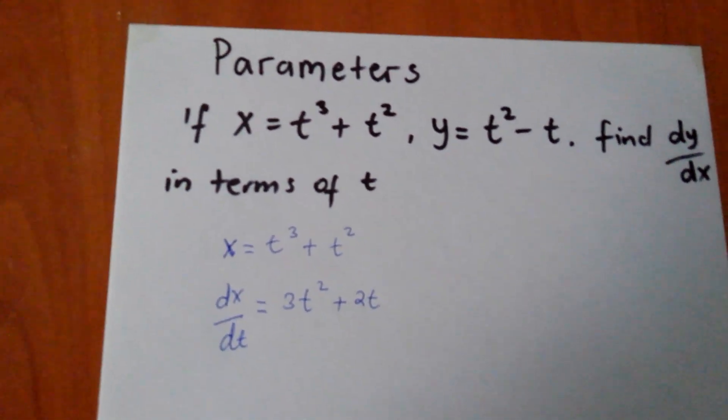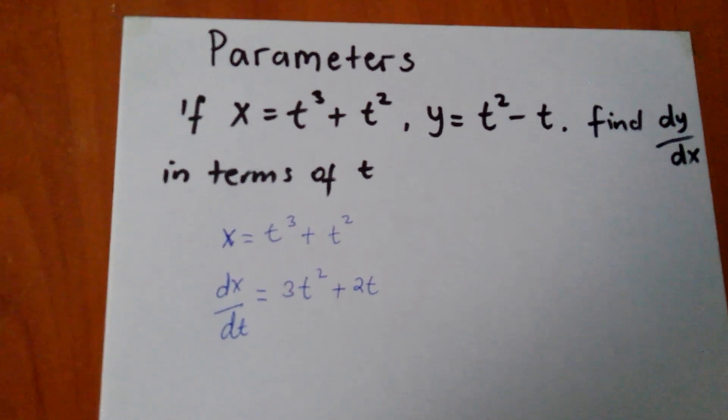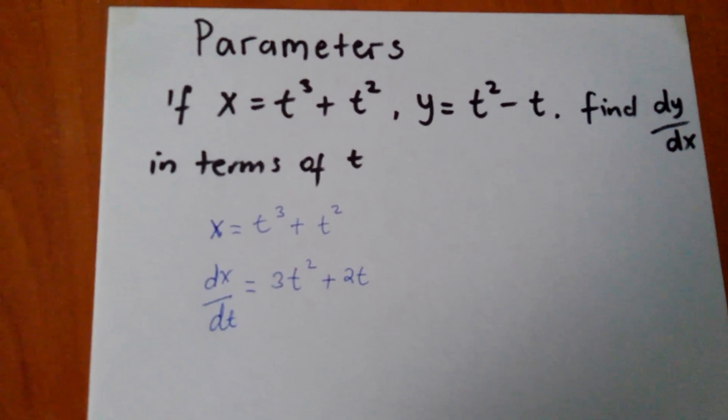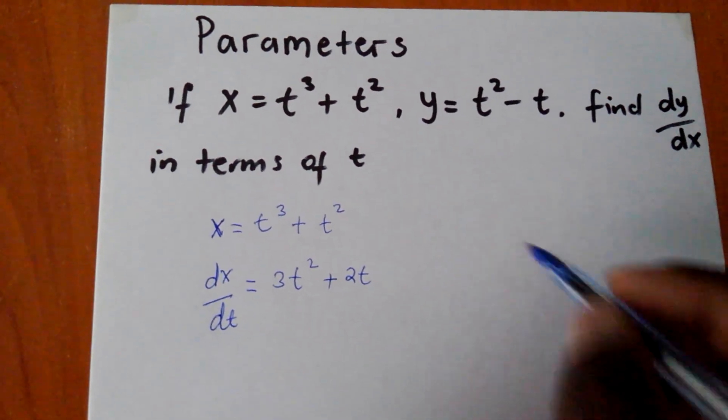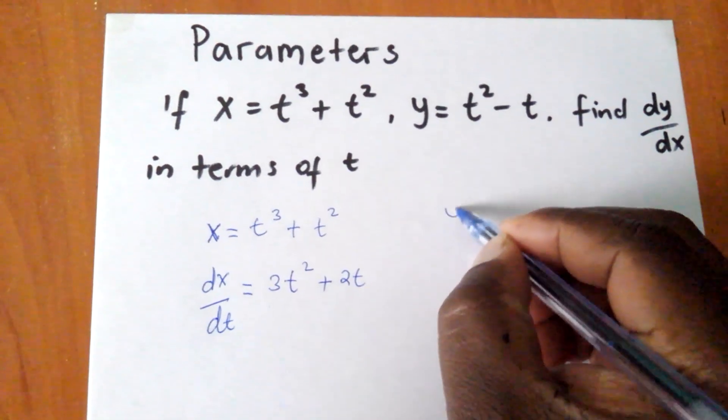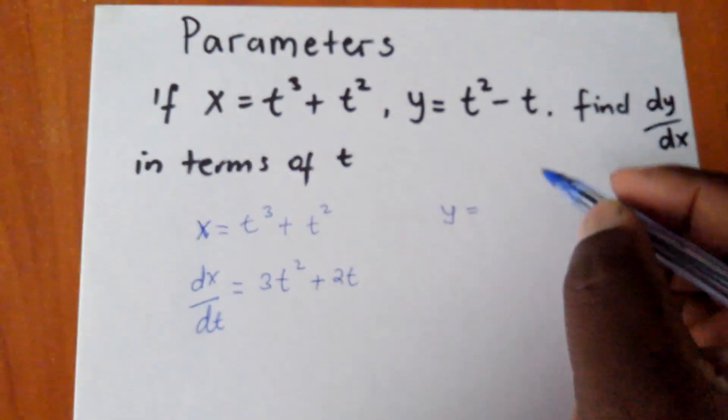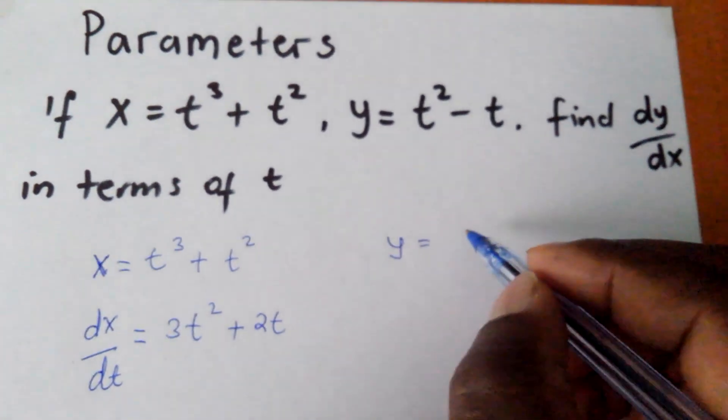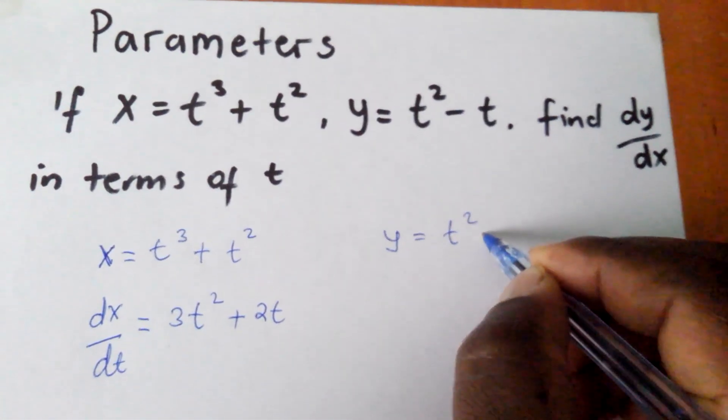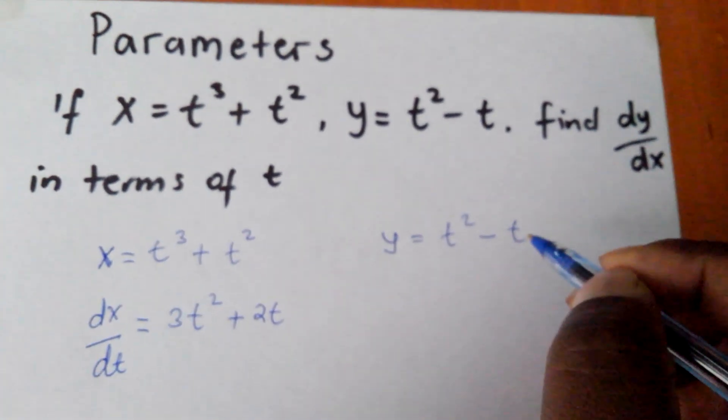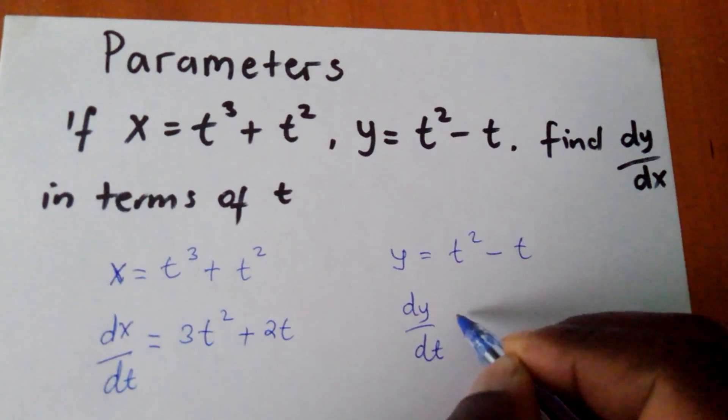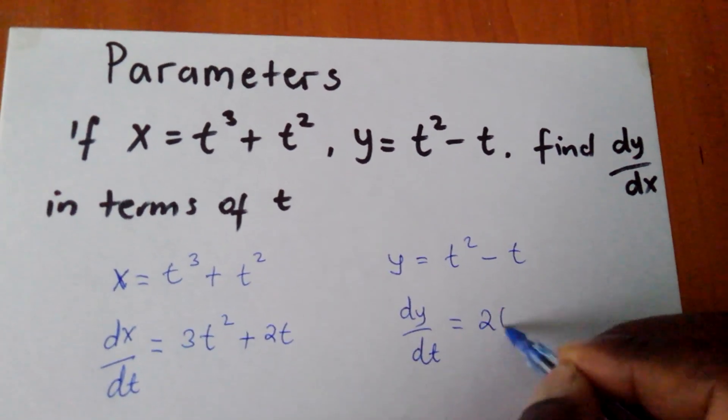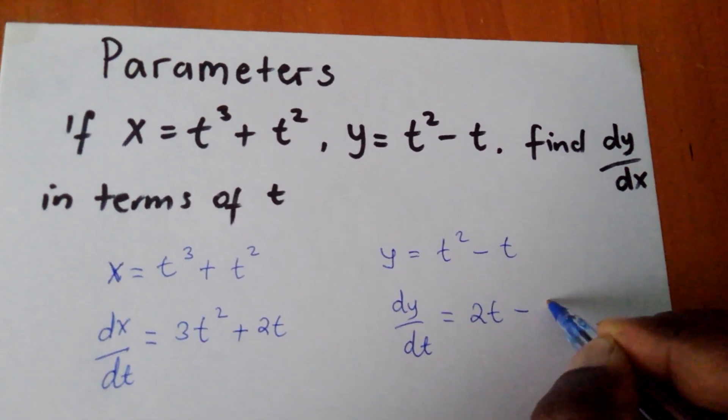I hope you are following. So this is my dx/dt. Another thing what I'm going to do, if my y is t squared minus t, so my dy/dt will be 2t minus 1.